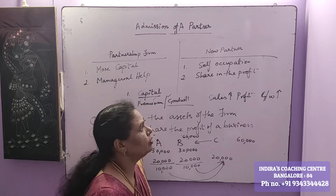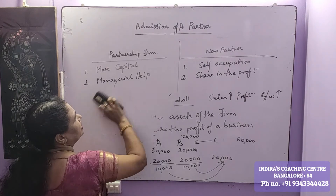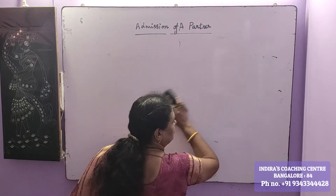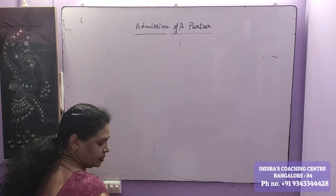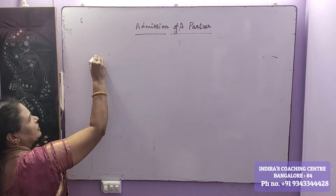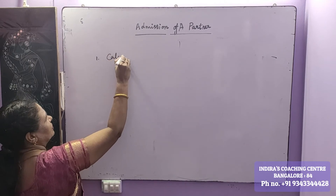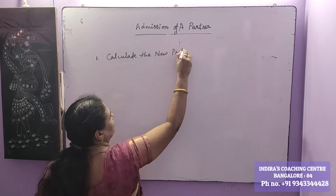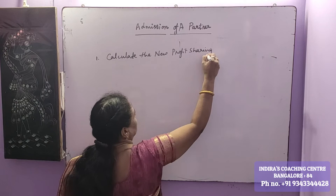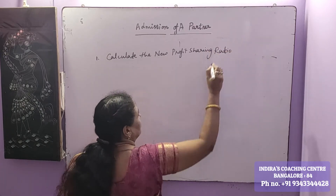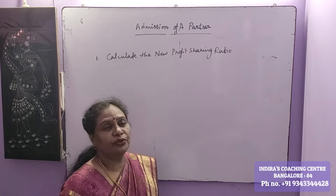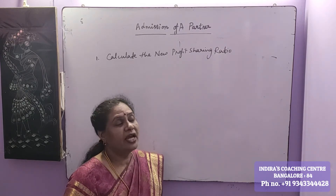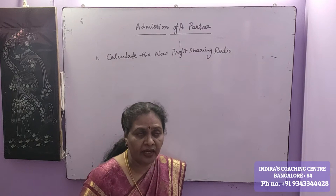Now, what are the other aspects of accounting at the time of admission of a partner? First, we have to calculate the new profit sharing ratio. Whenever a new person is admitted into the partnership, the agreement changes — a new agreement is made — and the profit sharing ratio will also change. Therefore, we are supposed to calculate the new profit sharing ratio.